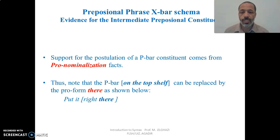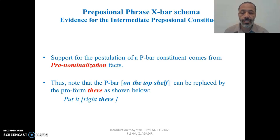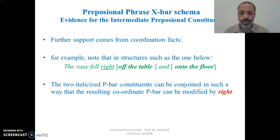As we did for the other lexical categories, we will see what elements support the postulation of a P-bar constituent. One argument can be based on pronominalization facts. In the example 'Put it right on the top shelf,' the phrase 'on the top shelf' can be replaced by the pro-form 'there': 'Put it right there.' The pro-form 'there' replaces 'on the top shelf,' which means this constituent is a P-bar and not a whole prepositional phrase, since the whole PP includes the determiner 'right' and what follows it.